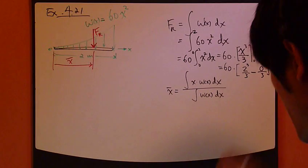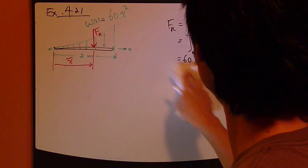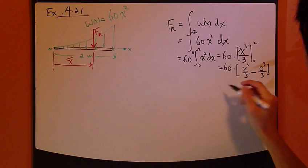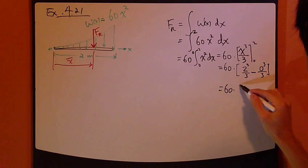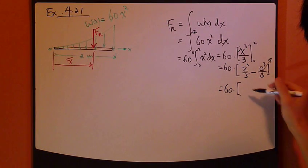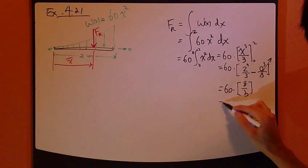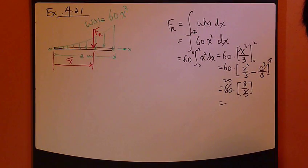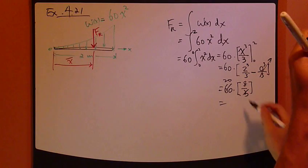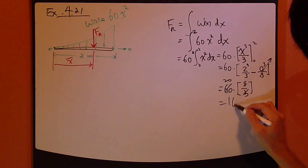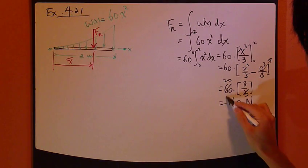So let me just erase this and give some more space. So this is just 0. This is 8 over 3. So 20 times 8, 160.